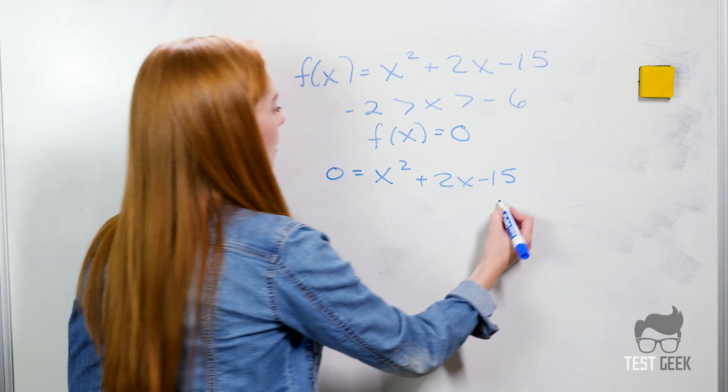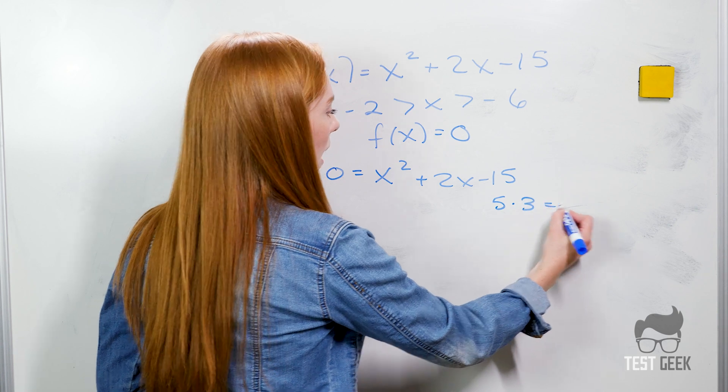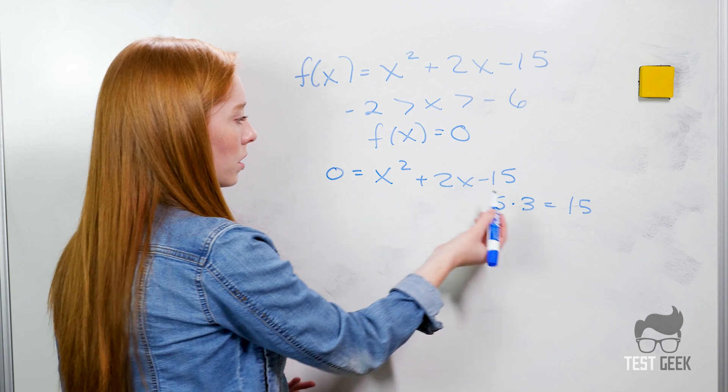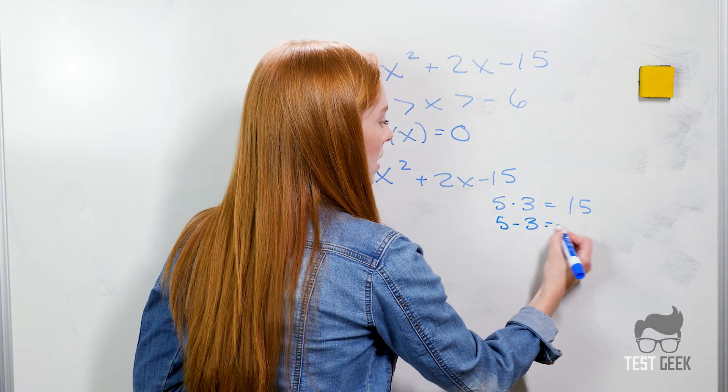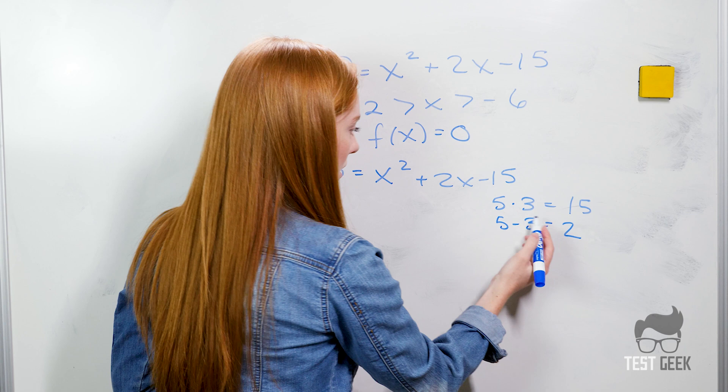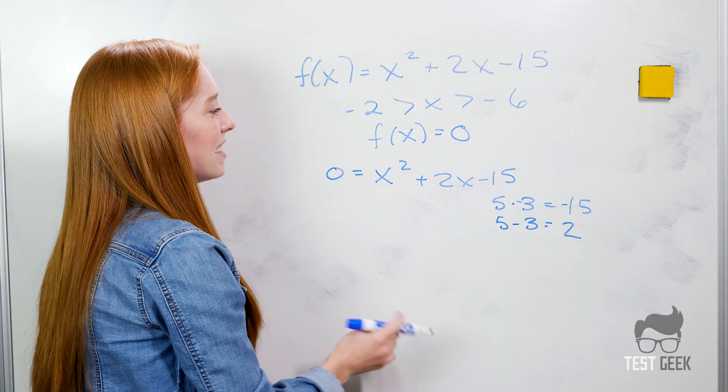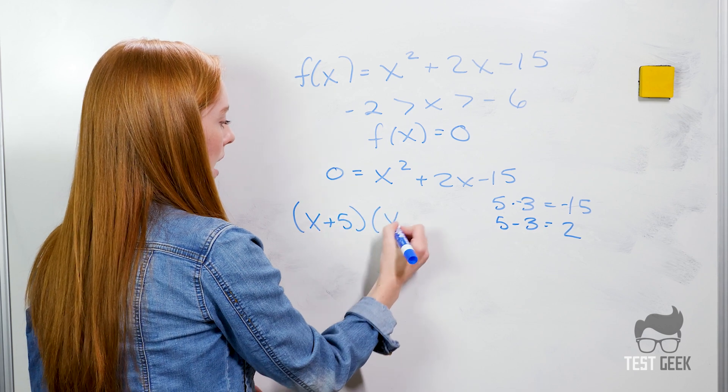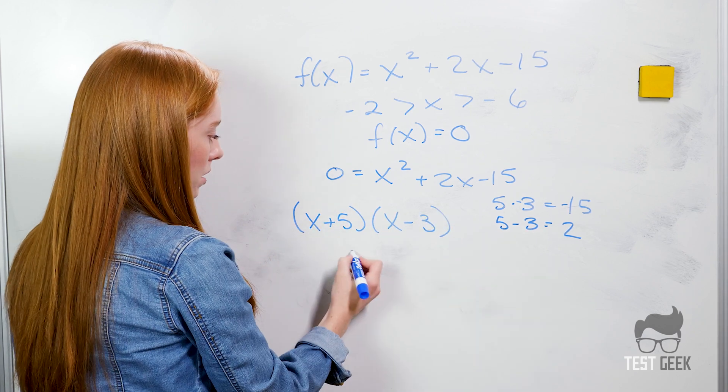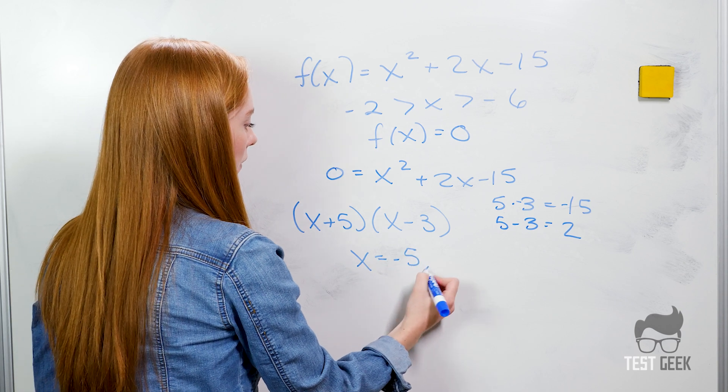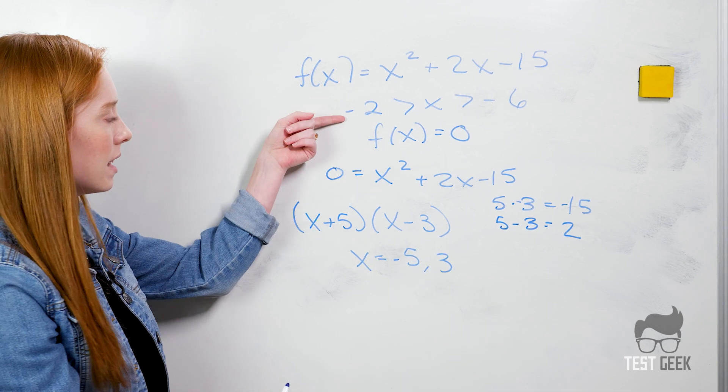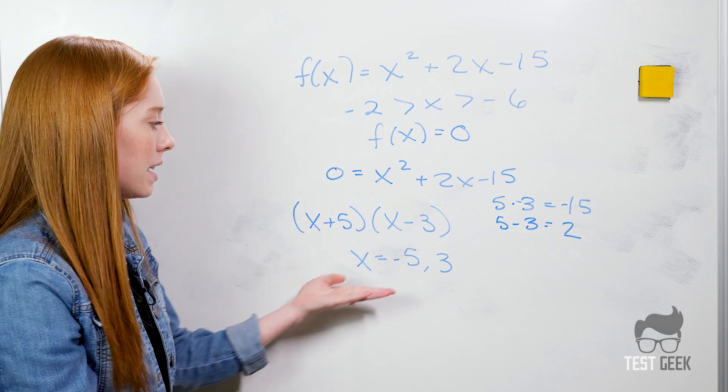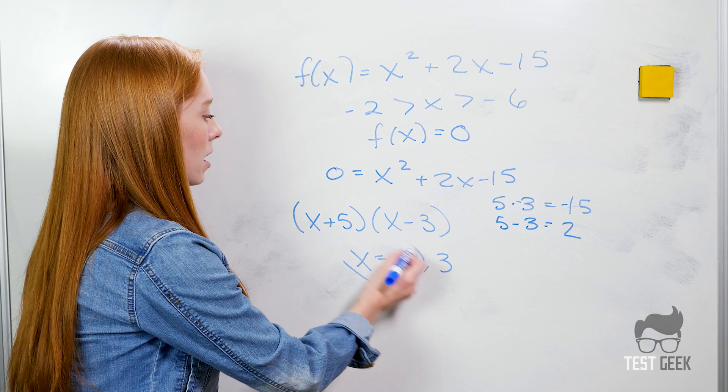Well let's start with 5 times 3. That equals 15. Now we just need to figure out which one is going to be negative. Well we want our 3 to be negative because 5 minus 3 equals 2. So our answers are going to be 5 and negative 3. So those are our factors. We have x plus 5 times x minus 3. So our answers will be x equals negative 5 and 3. Now we go back to this constraint and we have to figure out which one of these works. And the only one that works is negative 5. So that's going to be our only answer.